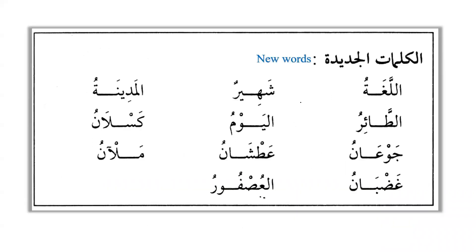Now: 'Al-kalimatu al-jadidatu' — the new words. What kind of phrase is this? It is not jar-majrur (no harf jar), not idafah (mudaf-mudaf ilayh), not isharah. It is masuf and sifah — noun and adjective. How do we know? They are equal in four properties: al-kalimatu is feminine and al-jadidatu is also feminine (al-kalimatu is the plural of kalimatun which is feminine). Both have al, both are marfu', and both are singular in treatment.